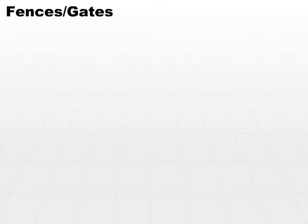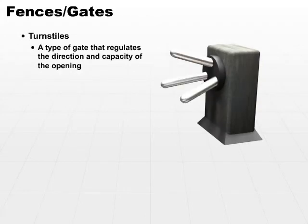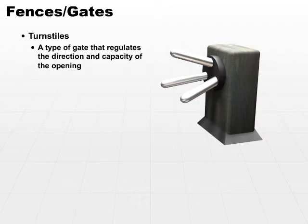Additional physical access controls include things such as turnstiles. A turnstile is a type of gate, and it can regulate both the direction and the capacity of the opening. It can not only make a gate a one-way gate, but it can also regulate how quickly people can go through. A couple of places we commonly see turnstiles are at events and stadiums, or any large-scale public events where you have to pay a ticket to get in, or in subways. Entryways to subway systems typically will have turnstiles of one form or another. Generally, turnstiles are single-person, one-way gates, although they can be configured and built in many different ways.